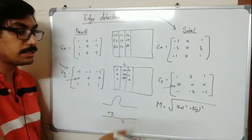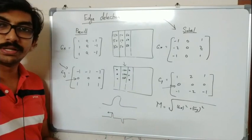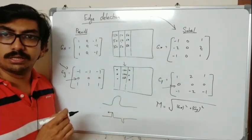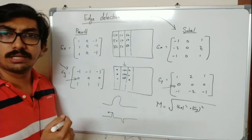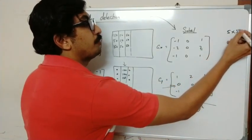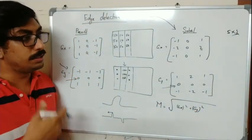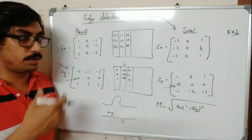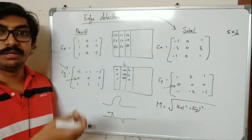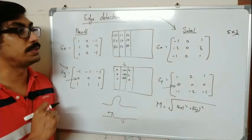Sobel works similarly to Prewitt — the only difference is that the center pixel is given additional weight in the Sobel kernel. Using Gy you get horizontal edges, and using the magnitude √(Gx²+Gy²) you get the complete edge image with both horizontal and vertical edges. Sobel is the most widely used edge detection algorithm and has an improved 5×5 kernel version. In the second-order derivative (Laplacian) family, the Canny detector is a much better edge detection algorithm.